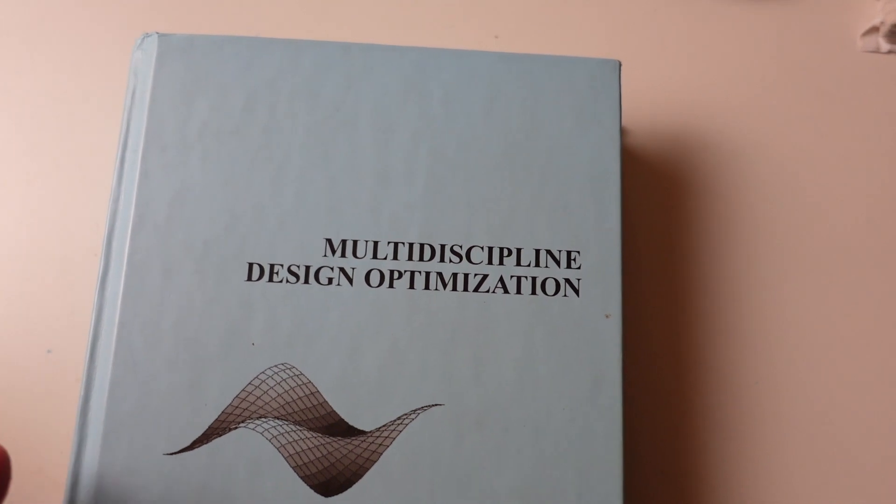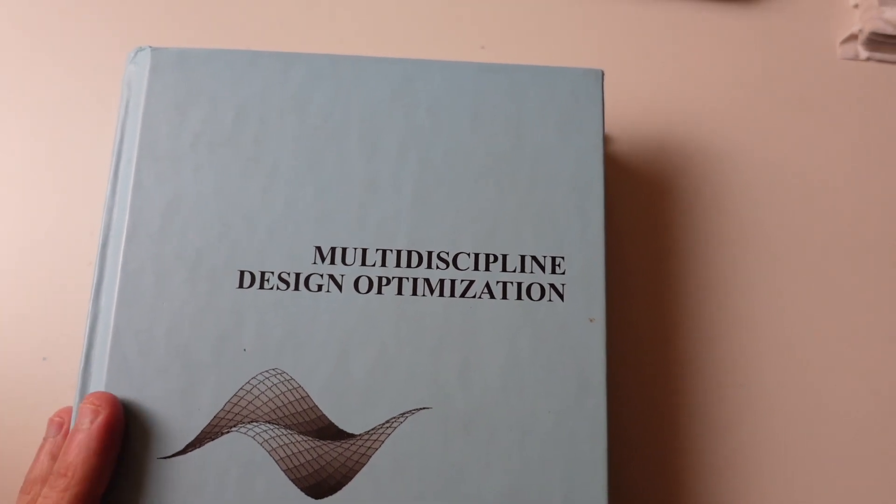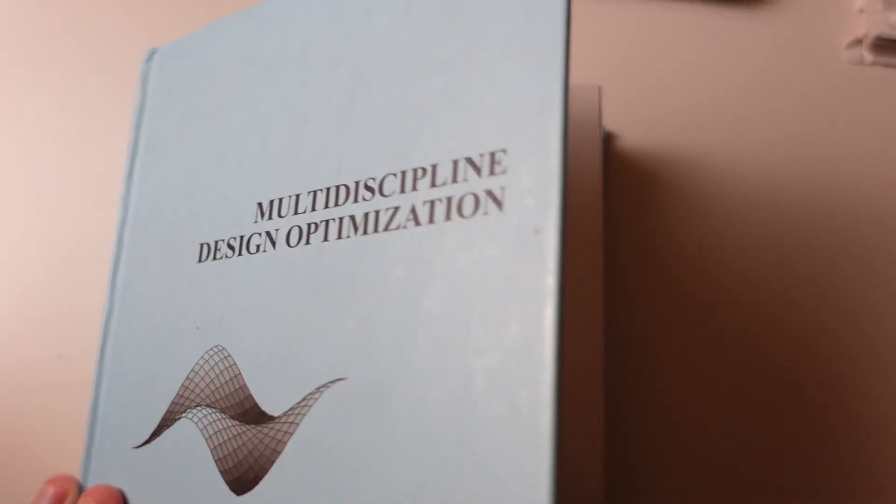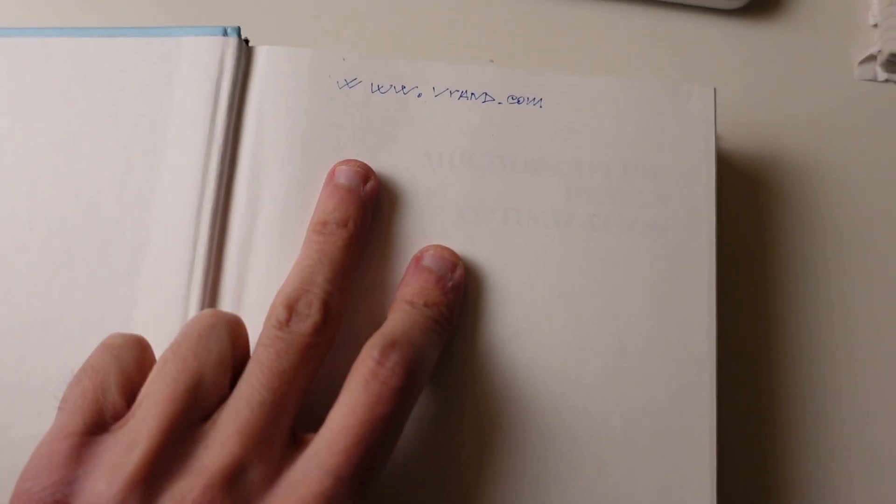This is a textbook that I bought many years ago and that you can find on the internet. But if you are interested in it, of course, don't buy on Amazon. Just buy it from this website: www.vrand.com, V like verify, rand like random number. In this website you will find all the information that you need to know.